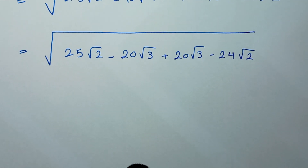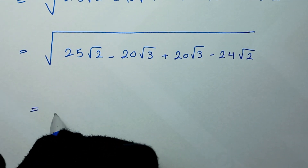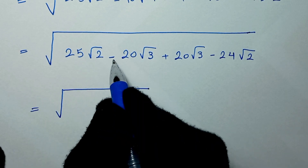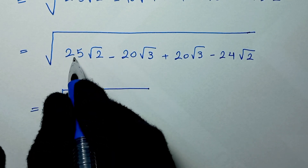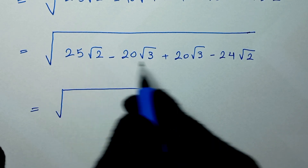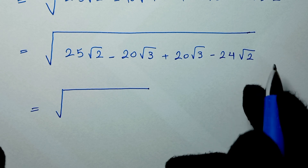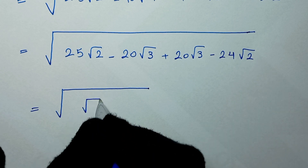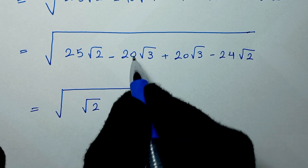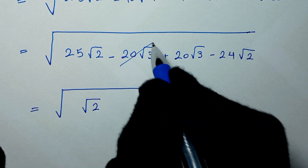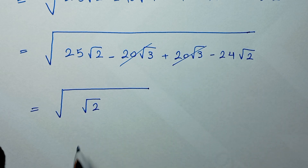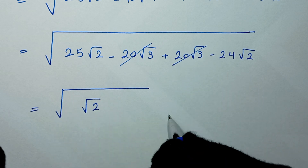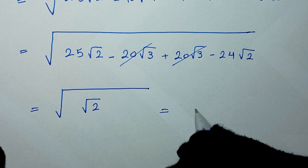In the next step: 25 square root of 2 minus 24 square root of 2 equals square root of 2. And 20 square root of 3 minus 20 square root of 3 cancels out. So we are left with square root of 2.